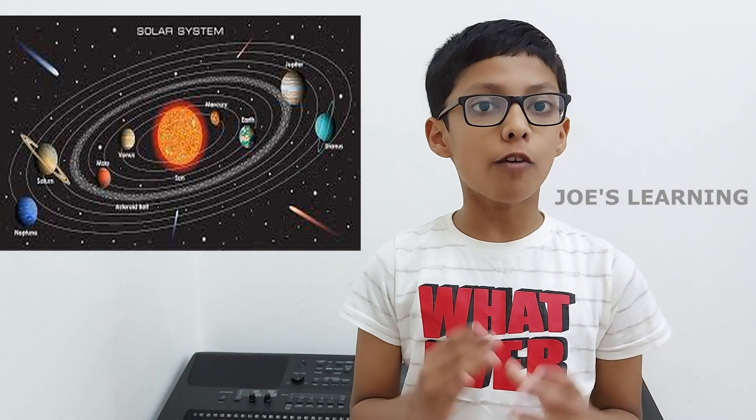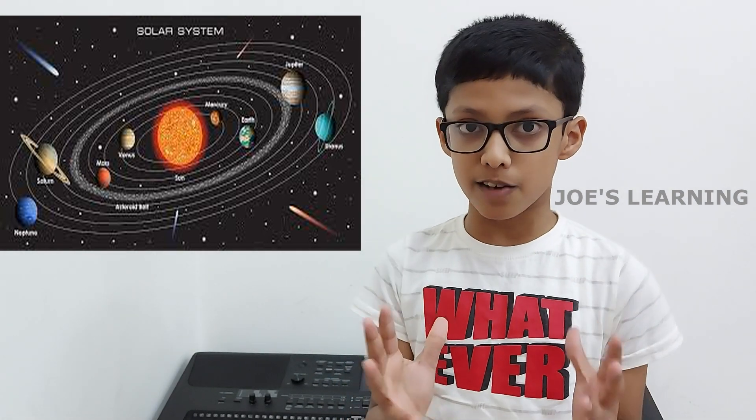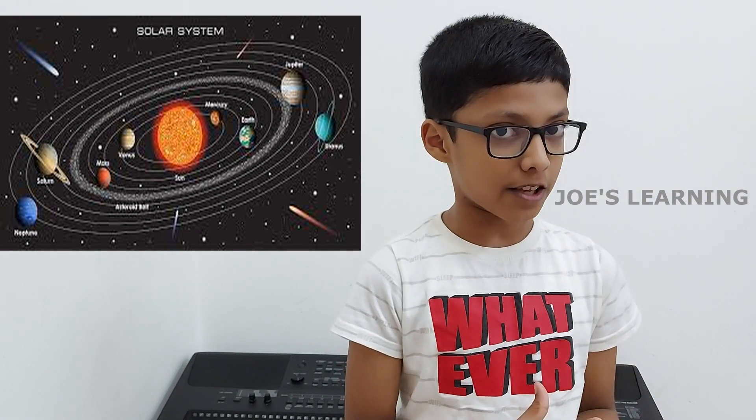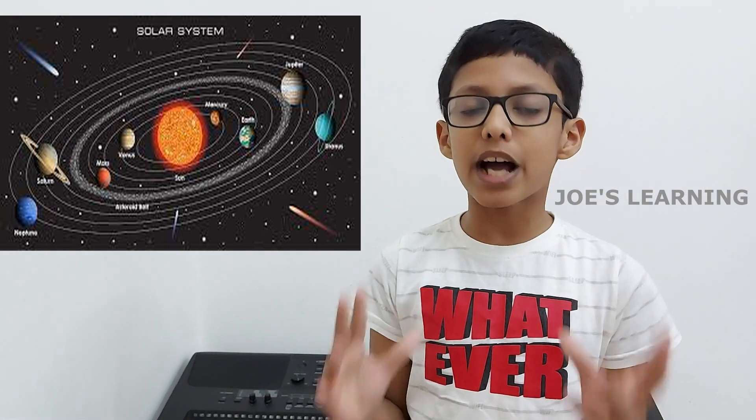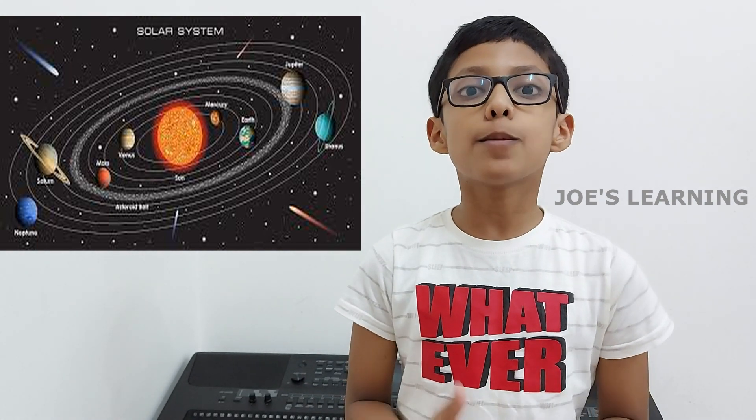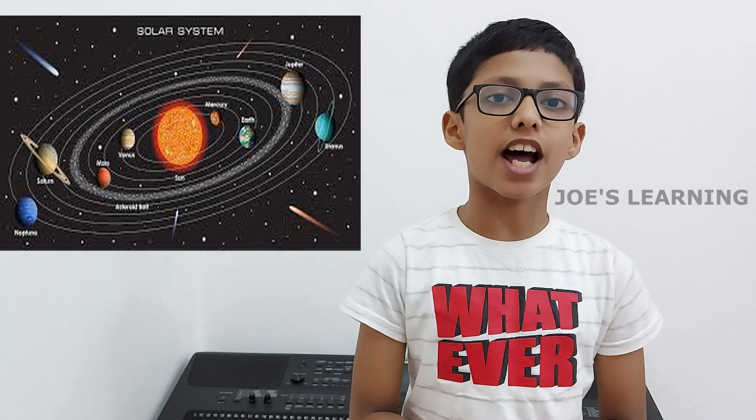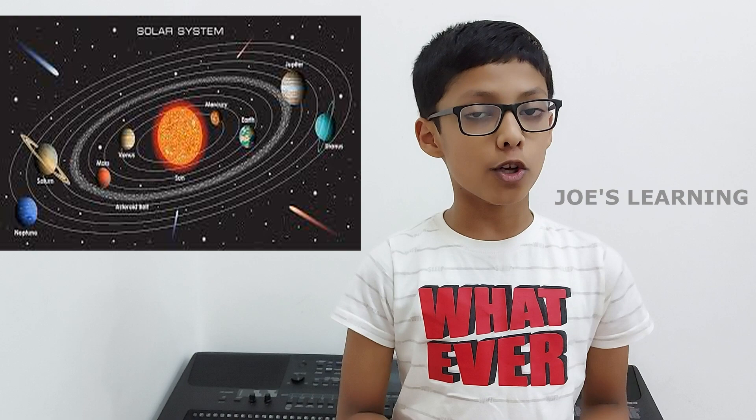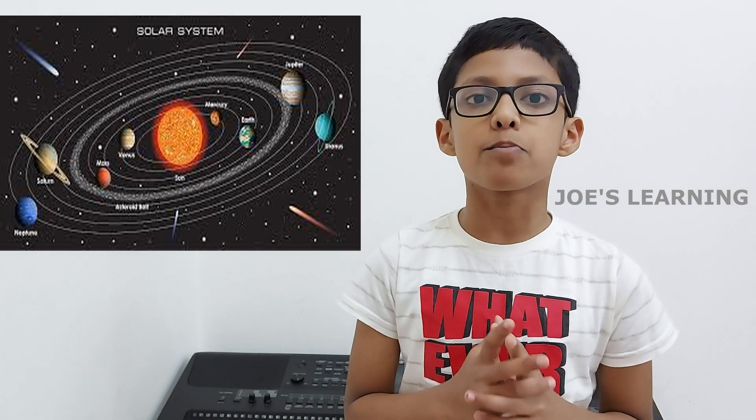The period of revolution will also differ because all the planets are at a different distance from the Sun. All the planets also vary in temperatures. And so, the planets which are closer to the Sun will have a hotter temperature than that of those which are farther away from the Sun.